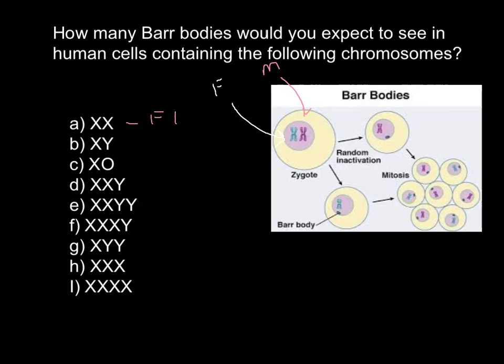This would be a normal male, and no Barr bodies would be formed because there is only one X chromosome, so no compensation mechanism is needed.